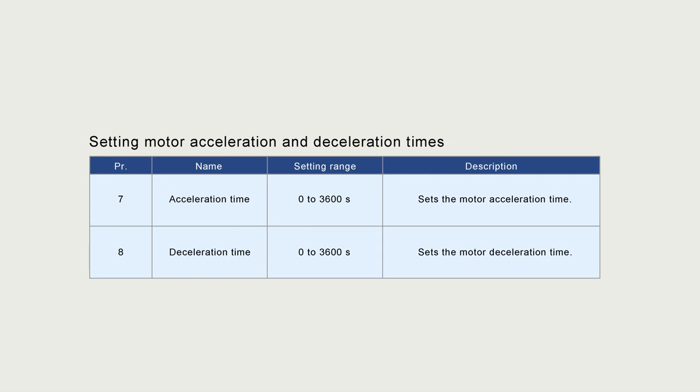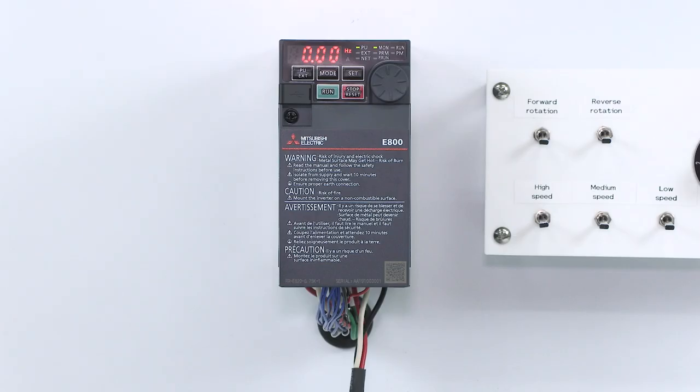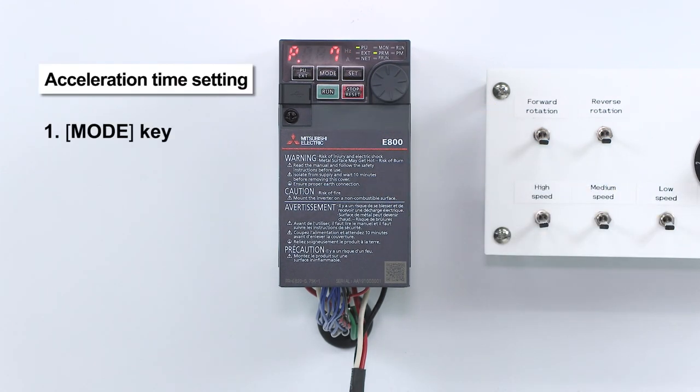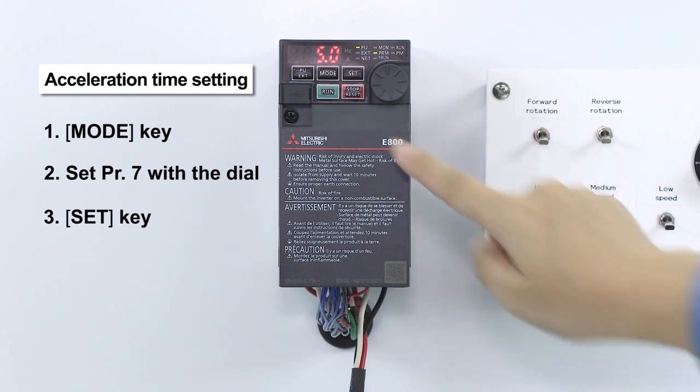Set motor acceleration and deceleration time with parameters 7 and 8. To set parameter 7, push the MODE key, select parameter setting mode, and turn the dial to 7.